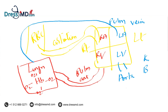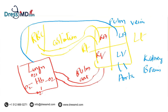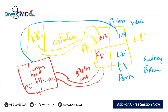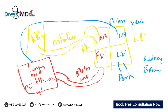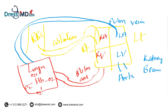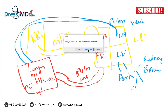From the aorta, oxygenated blood travels to the kidney, brain, and different organs of the body. So the RBC journey goes: bone marrow → circulation → right atrium → right ventricle → pulmonary artery → lungs (oxygenation) → pulmonary veins → left atrium → left ventricle → aorta → different parts of the body.